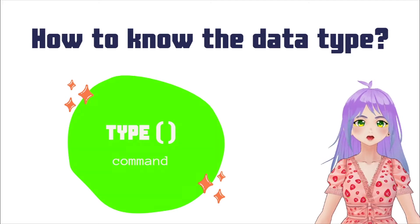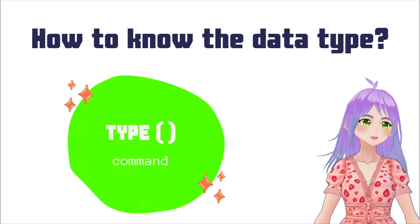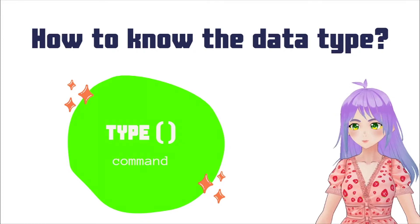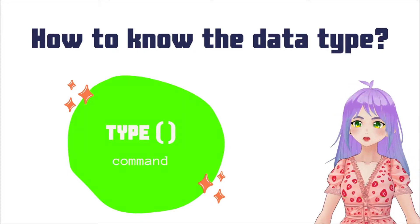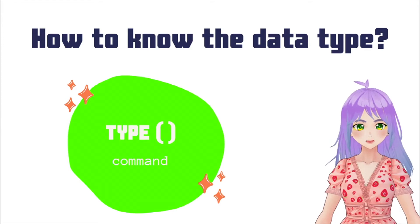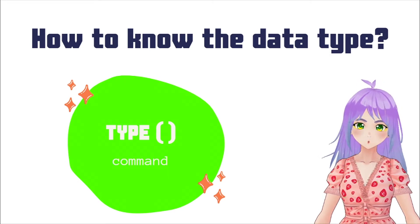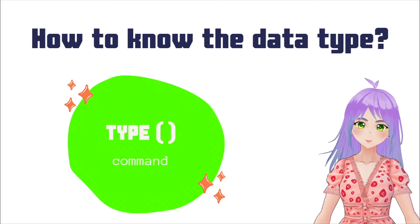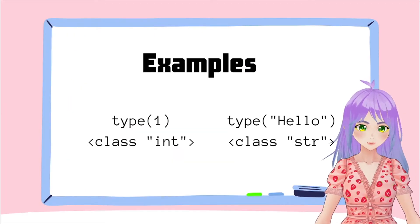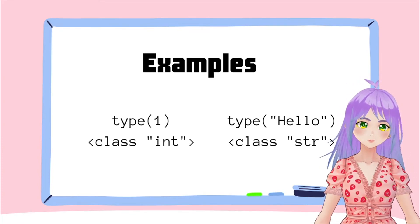So how can we know the data type that we are working with in our programs? Well, that's really, really easy. The only thing that we need is the command type. And what we pretty much have to do is go to our terminal or to the terminal in our text editor and write type, open parentheses, and between those parentheses we write the data that we want to know. Here I have a couple of examples.